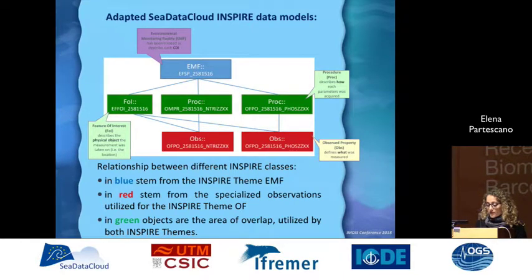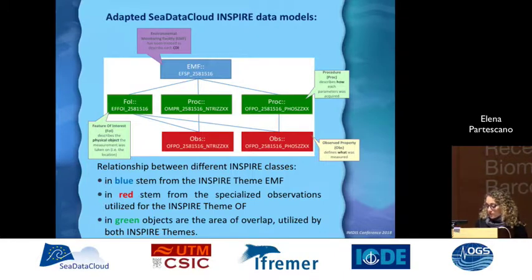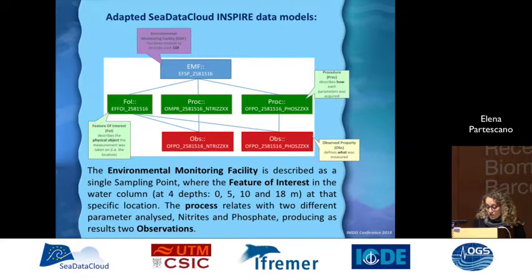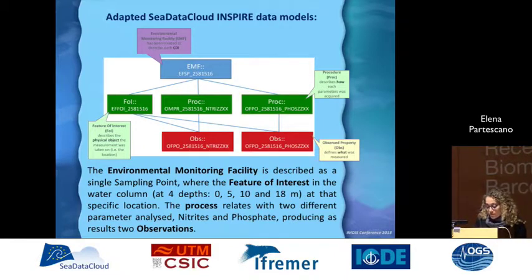This is the adapted schema. On the top we have the environmental monitoring facility created to describe the CDI metadata. There is the feature of interest that describes the physical object, the procedure about how each parameter was acquired, and for each procedure we have observed properties that define what was measured. The environmental monitoring facility is described as a sampling point, where the feature of interest is the water column in a specific location. The process is related to two different parameters, nitrates and phosphates, producing two observations.